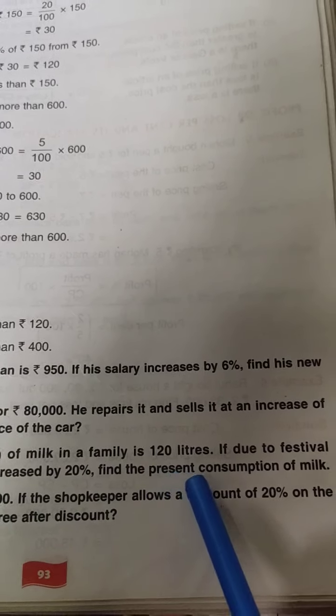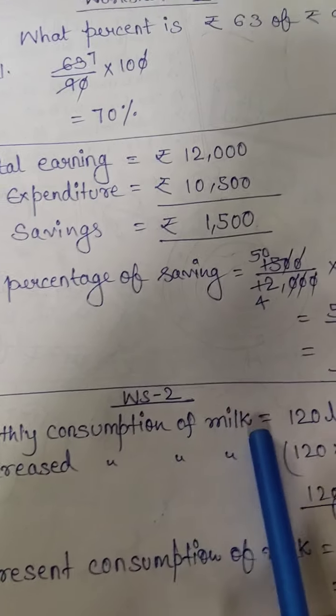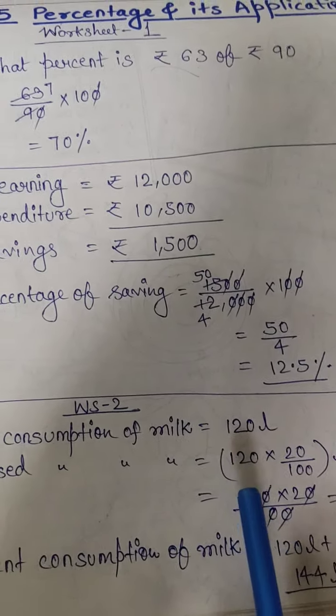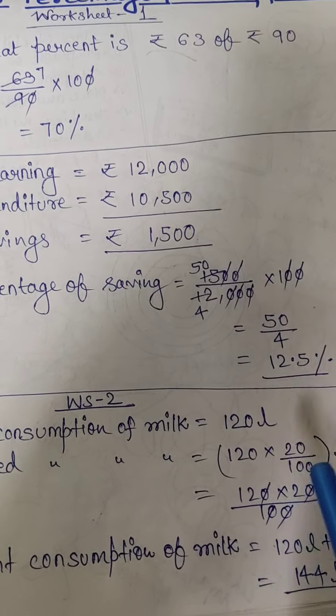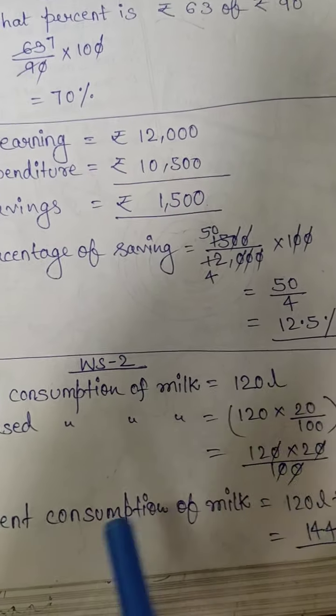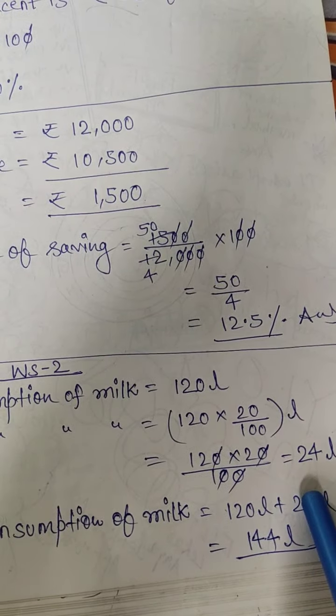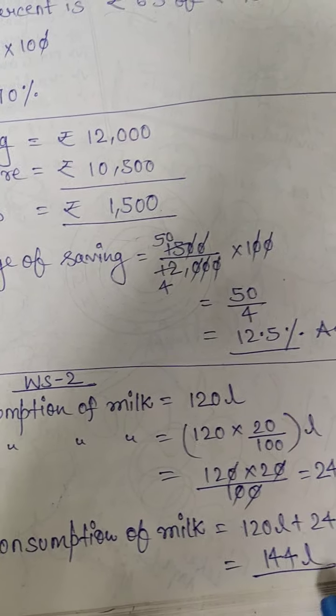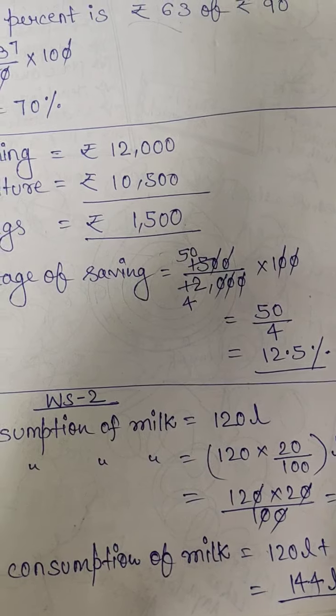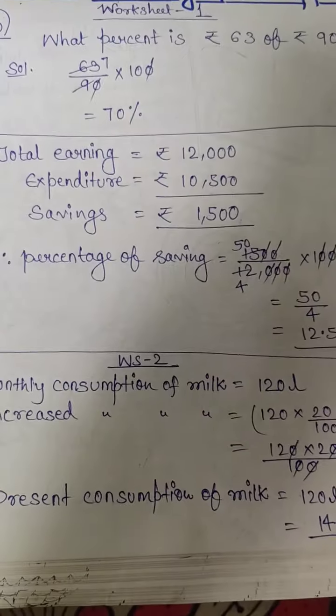Find the percent consumption of milk. So what you will do? First you will write monthly consumption of milk: 120 liter. Increased consumption of milk: that will be 120 into 20 by 100. That means we are finding 20% of 120. That is 24 liter. Then we will find present consumption of milk by adding 24 to 120. The method are same. So finally you will get 144 as answer. In the same way, you will be able to solve all the questions of your both the worksheets.